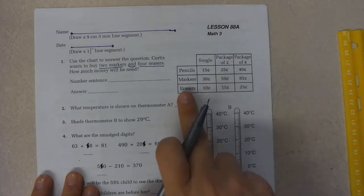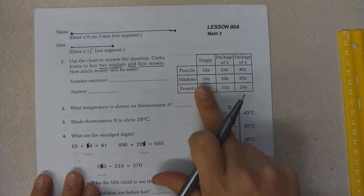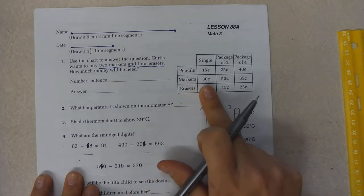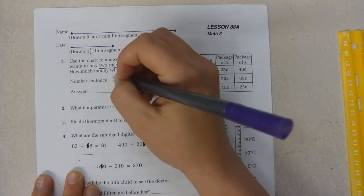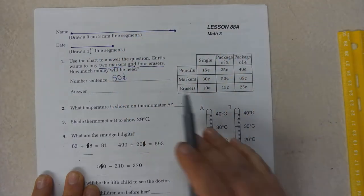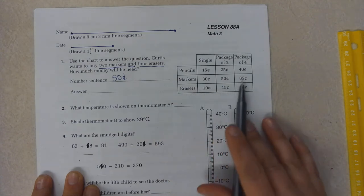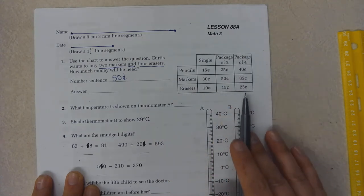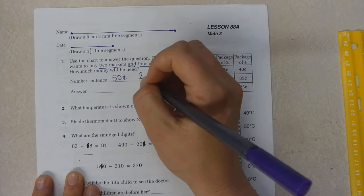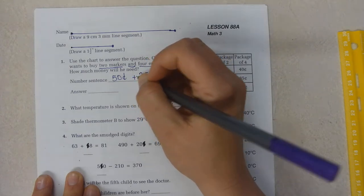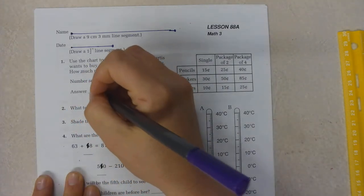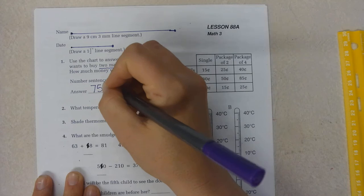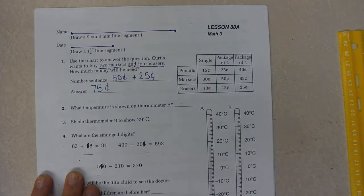2 markers. Let's look. I can buy single packs for 30¢, or I can buy 2 packs for 50¢. So I'm going to say 50¢. And 4 erasers. If I look right here, there's a package of 4, and it's 25¢. And I will be adding 50¢ plus 25¢ is 75¢. That's how much money they will need.